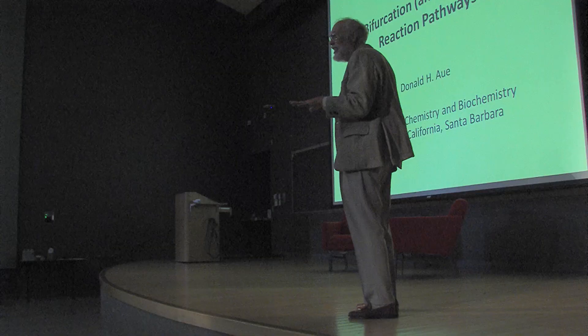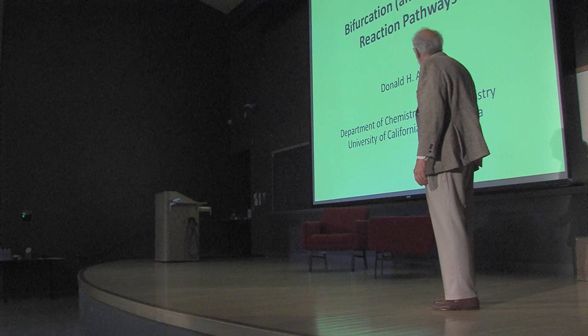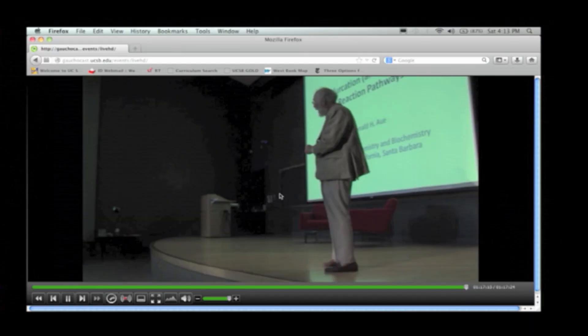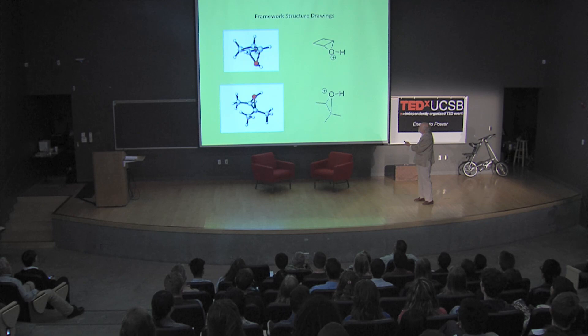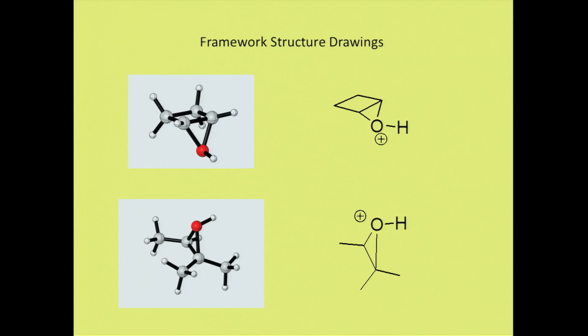Before we start, I know this is a fairly general audience, so I'd like to show you how I'm going to depict chemistry structures. The structures on the left show gray carbon atoms, small hydrogens, red oxygens. The structures on the right are framework structures where we remove the hydrogens, so this CH3 group just appears as a line with a carbon at the end. Every point here is a carbon atom.